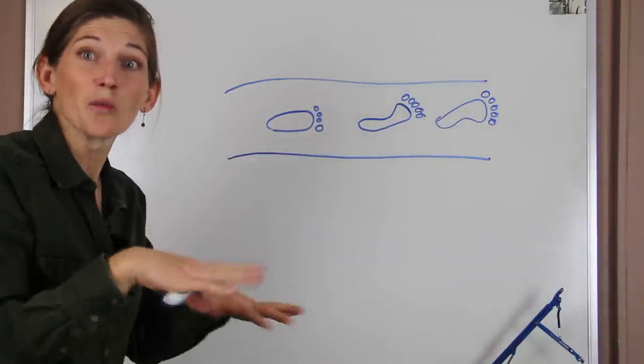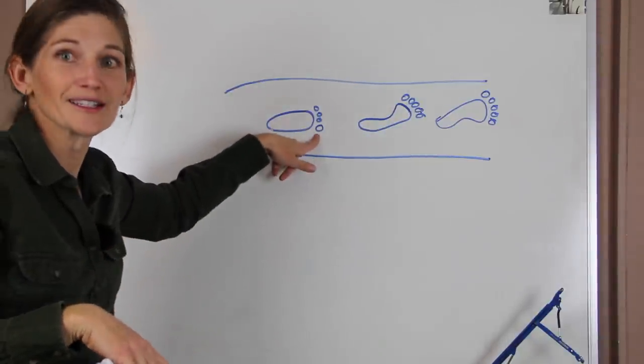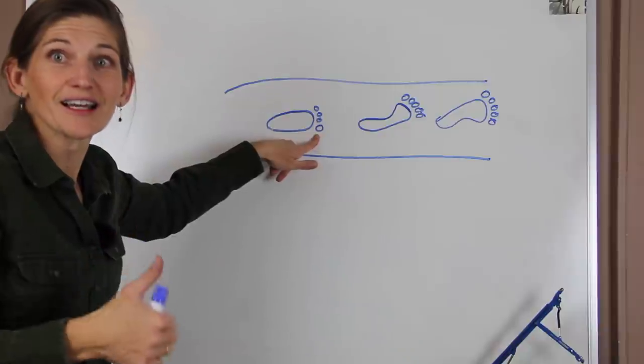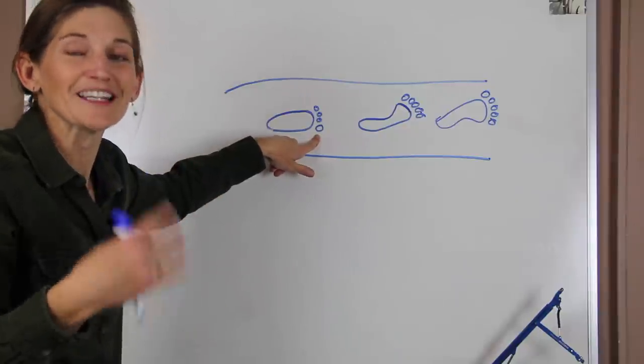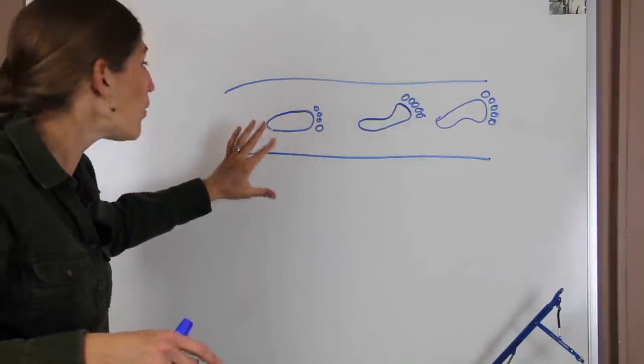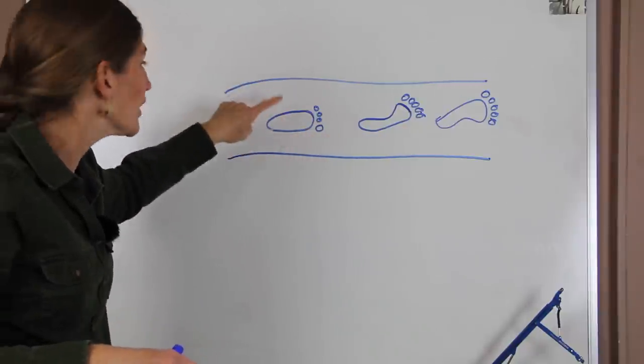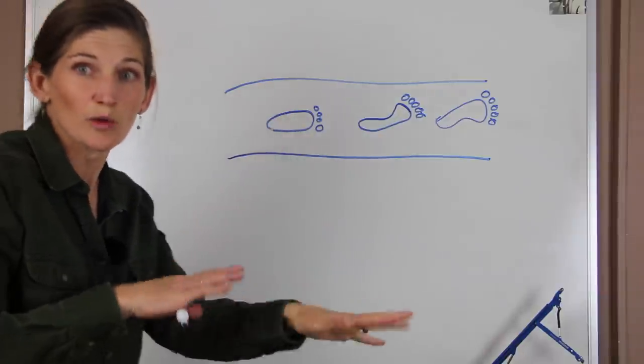Now we do find places where human footprints have been left behind in volcanic mud. When you have a volcano erupt it leaves ash that falls out of the sky, and if it gets wet it makes a really sticky mud that can record footprints. Ash is awesome because you can radiometrically age date it to figure out how old the volcanic ash is, and therefore how old the footprints are.